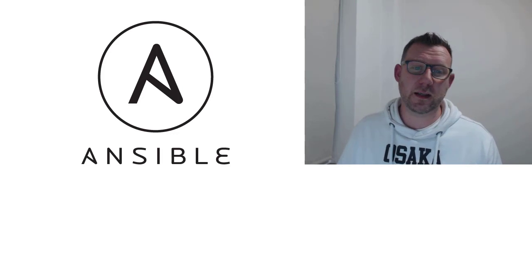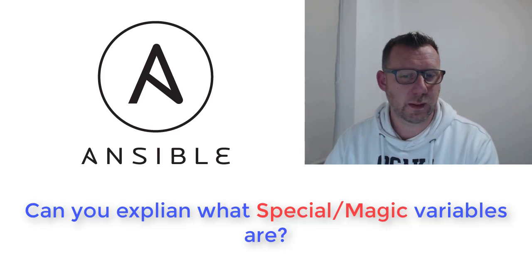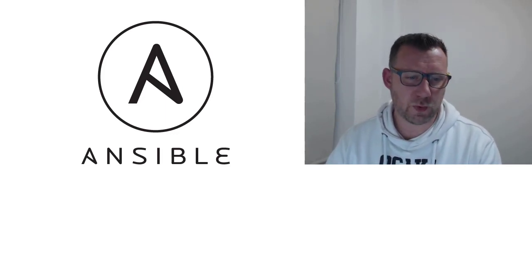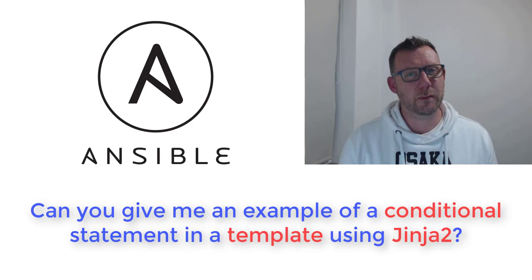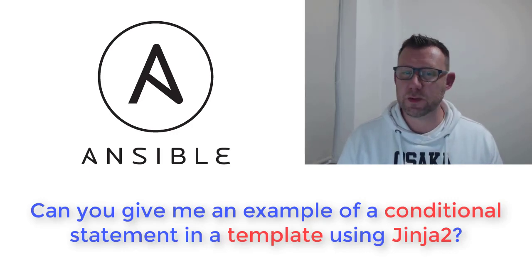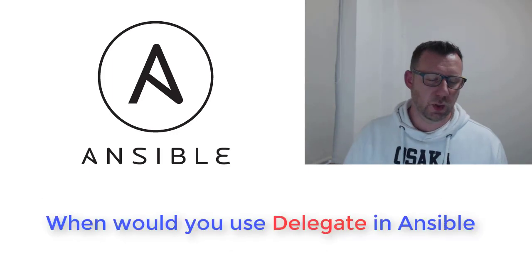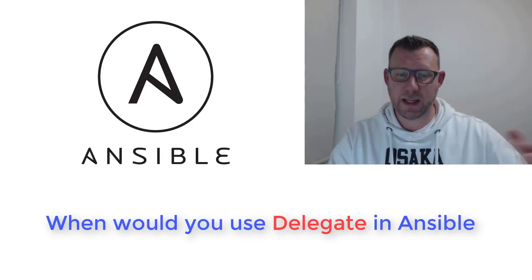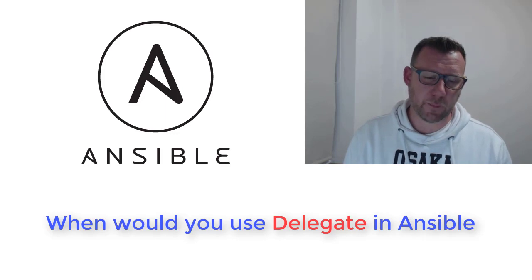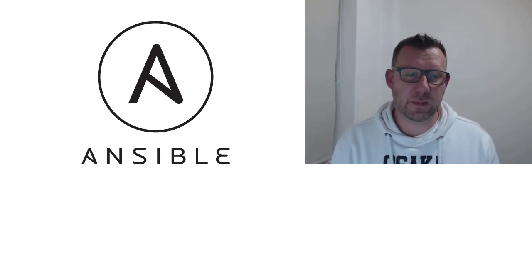As a couple of bonus points: can they explain what special variables are in Ansible and how they're used? Also, given Jinja2 templating, give an example of a conditional or loop statement — it can be tricky to have an if-else inside a template, so it's good if they can explain that. And as a final question: when would you use 'delegate' in Ansible? For example, delegating a task to run on localhost within a playbook that's running on remote servers.